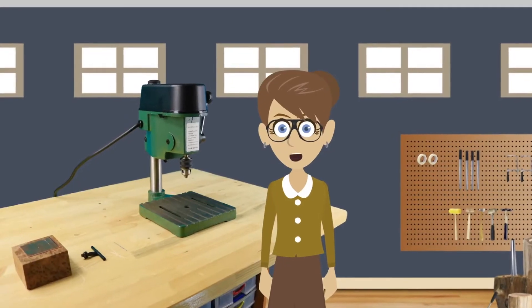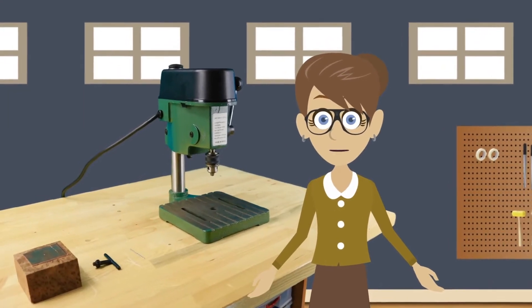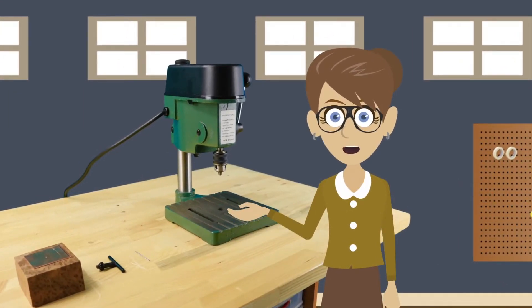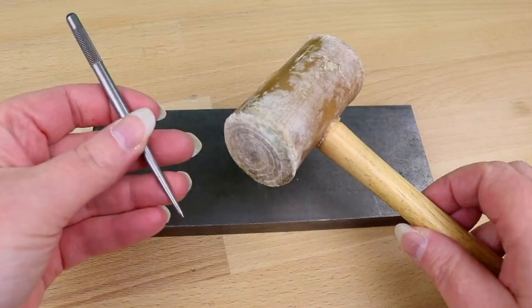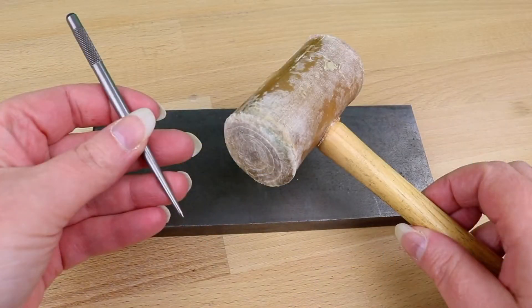Before you drill, you'll need to make a center punch. A center punch is a small divot in the metal which will catch the drill bit, so it doesn't skitter around on the metal, making a mess. You'll need a steel block, a soft hammer, and a center punching tool.